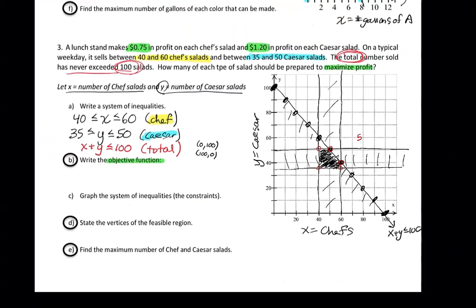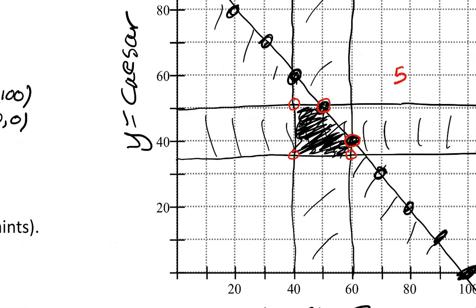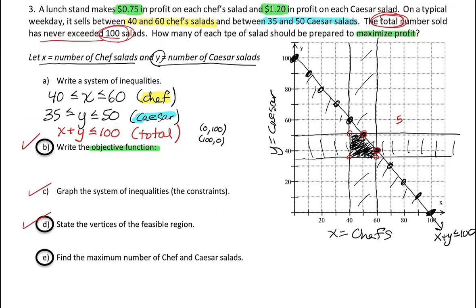For the try-this: write the objective function using correct function notation. We've already graphed the system, so you don't have to do that. State the vertices clearly from the graph. Finally, find the maximum number of chef and Caesar salads by using the objective function to determine how to maximize the profit. Thanks for watching this video — see you next time.